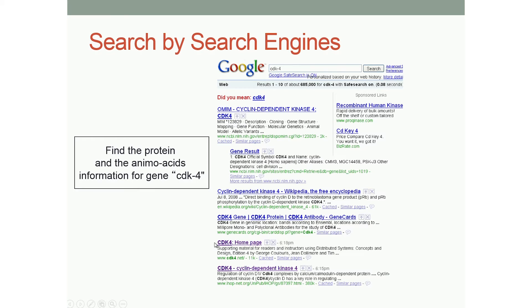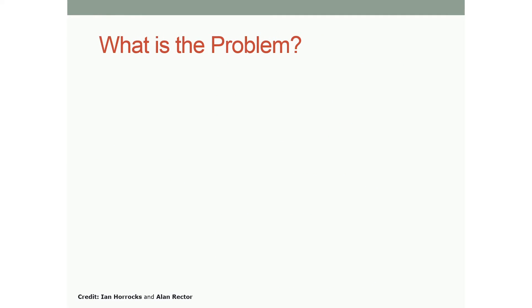Sometimes it's really hard to find the right keywords, and this process can be very time consuming and painful. Here I want to show you this link — CDK4 actually stands for 'Concepts and Design Edition 4,' which has nothing to do with the gene. As I said, it's ambiguous. So we want to find a better way to solve this problem.